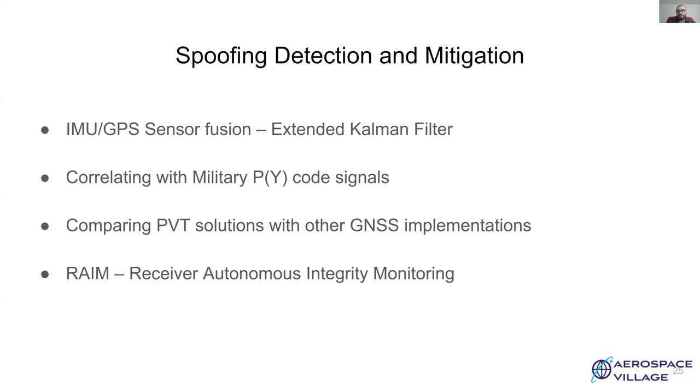Another simple spoofing detection strategy involves comparison of PVT solution obtained from GPS with PVT solution obtained from other satellite navigation systems like GLONASS, Galileo or Beidou. However, an attacker can simply spoof other systems as well as these systems are also vulnerable to similar attacks. Receiver Autonomous Integrity Monitoring or RAIM is a spoofing detection technique that is very popular in aviation. Almost every commercial aviation GPS receiver implements this. It works on detecting outlier satellites. These satellites are excluded from PVT calculation. Thus, it requires six or more visible satellites.